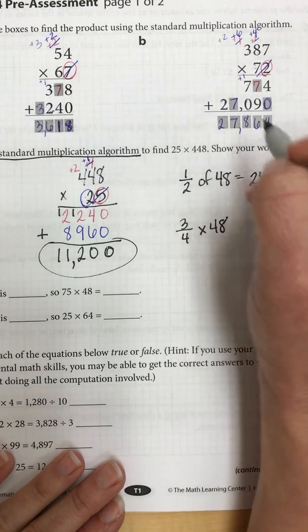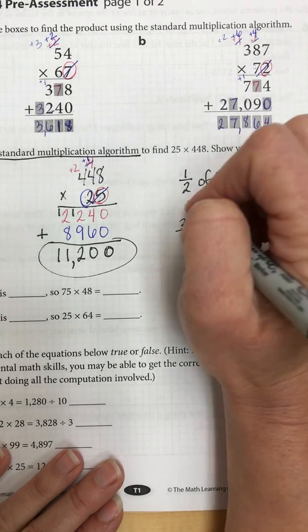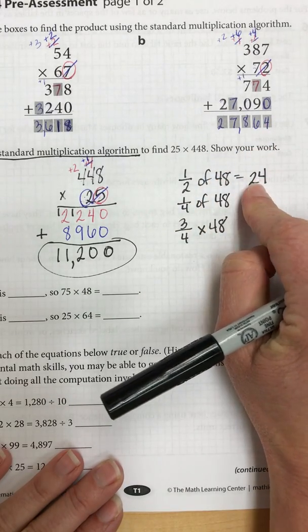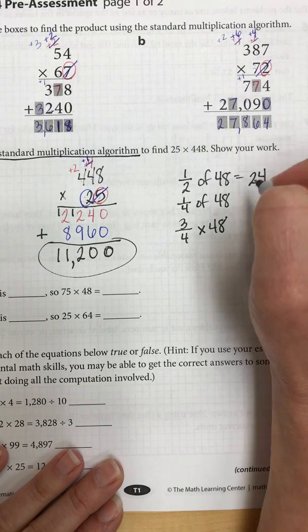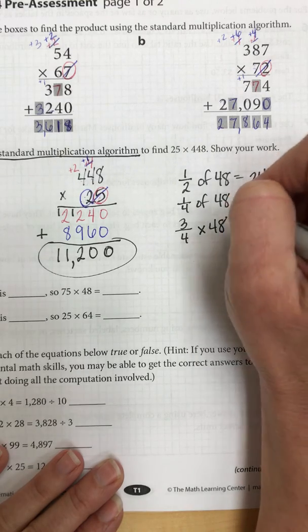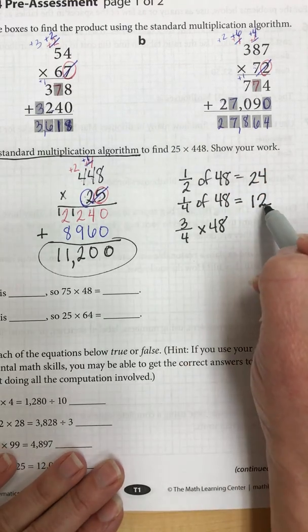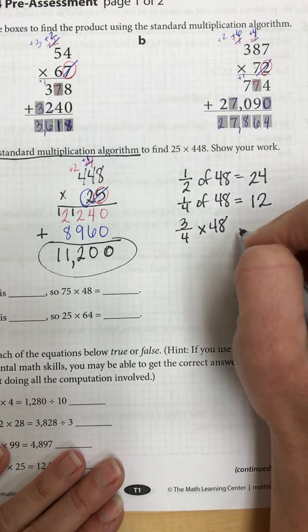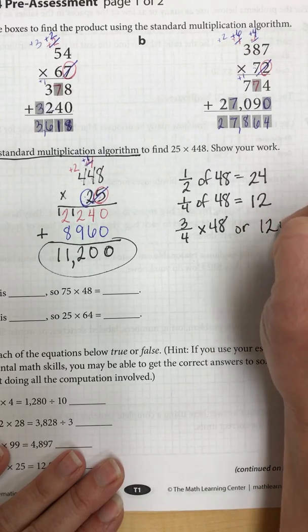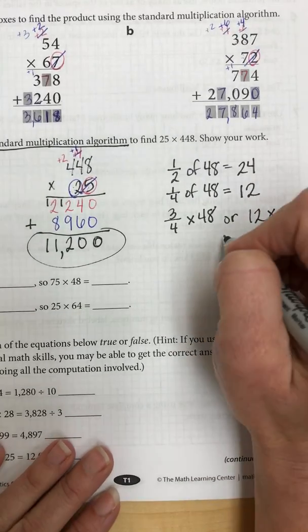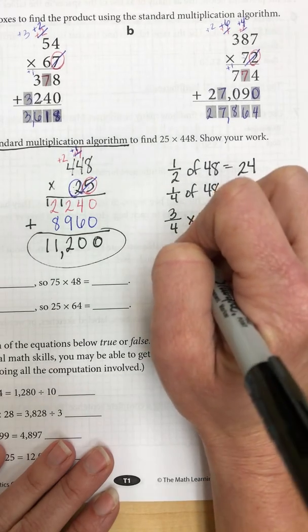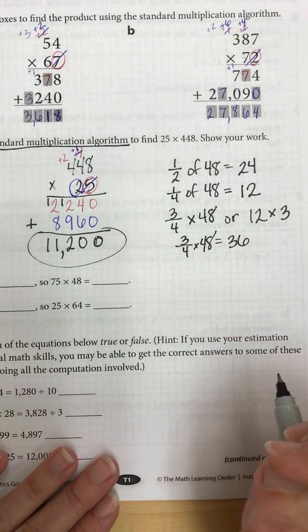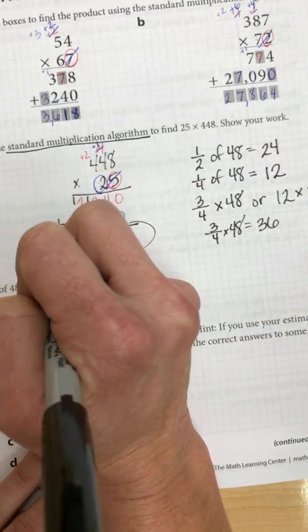That's easy for me to do in my head. So I know if I cut it in half again, one fourth of 48, that's going to be half of this, because a fourth is half of a half. So 1 fourth of 48 is going to be 12. So if 1 fourth of 48 is 12 and I need 3 fourths, 3 fourths times 48 is going to be the same thing as 12 times 3. 12 times 3 is 36. So 3 fourths times 48 equals 36.